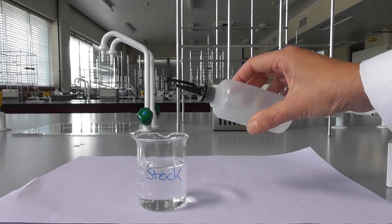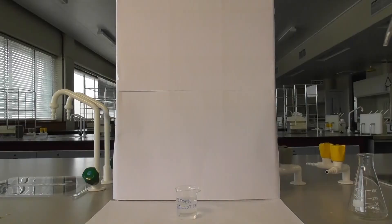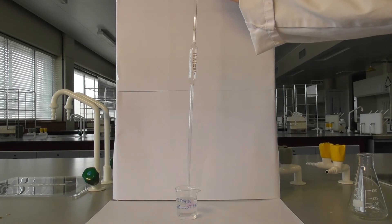We've added phenolphthalein to our stock solution to detect a change in the pH. This pipette looks clean, but it hasn't been rinsed. The small amount of residue left on the pipette is enough to contaminate the entire stock solution.